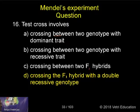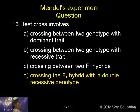The correct answer is D — crossing of the F1 hybrid with a double recessive genotype.